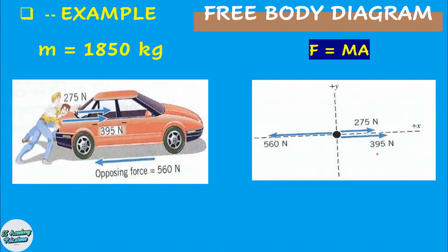275 plus 395 minus 560 will give us net force sigma F which will turn out to be plus 110 Newton. Since mass is given and forces we have calculated, using Newton's second law of motion, a equals sigma F over m. Substituting the values of these two quantities, the acceleration of the car comes out to be 0.059 meter per second square. The plus sign indicates that the acceleration points along the x axis in the same direction as the net force.